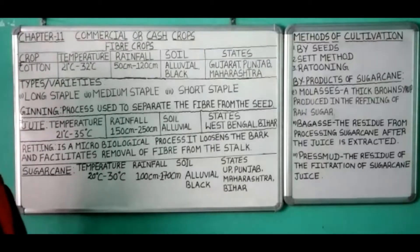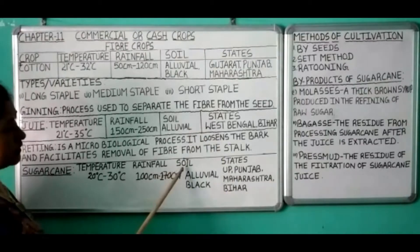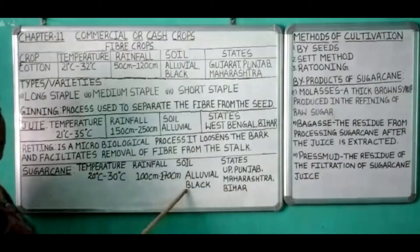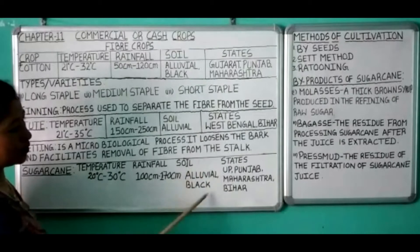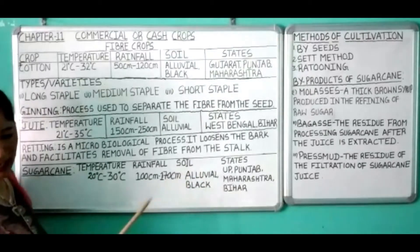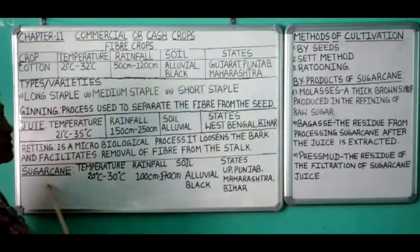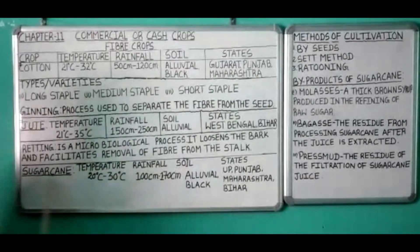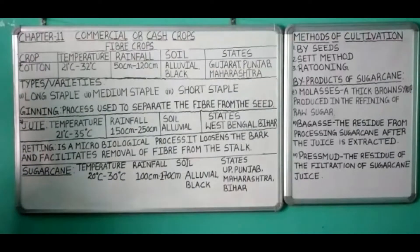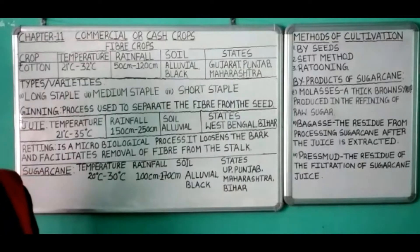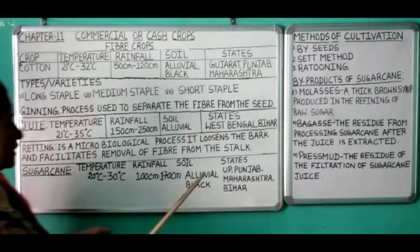Regarding soil, sugarcane grows in alluvial soil as well as black soil, so both types are well suited for its cultivation. At the same time, remember that sugarcane is also a soil exhausting crop, so fertilizers have to be used regularly in order to retain the fertility of the soil.